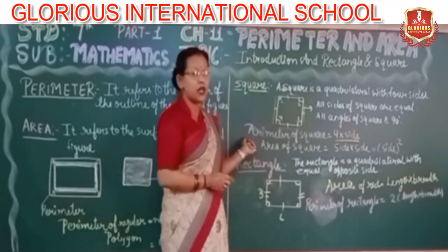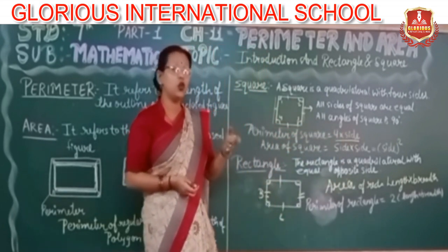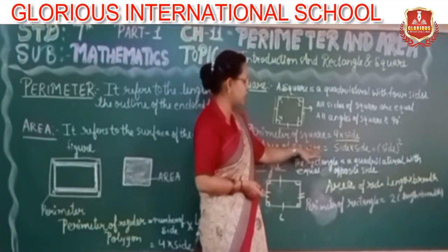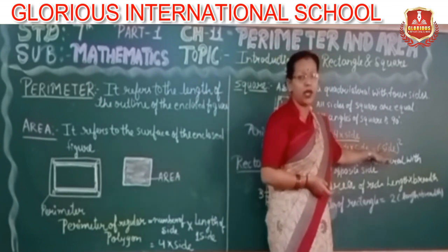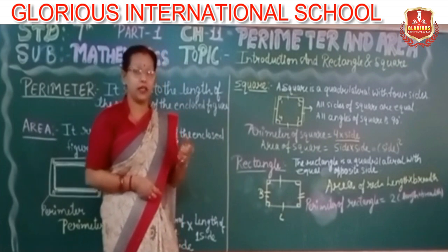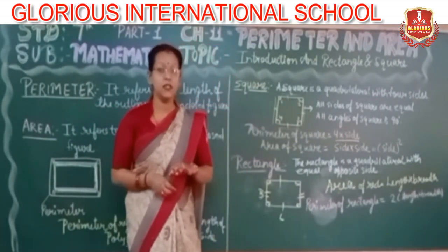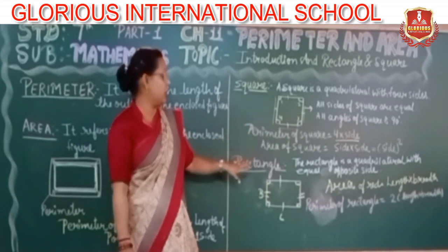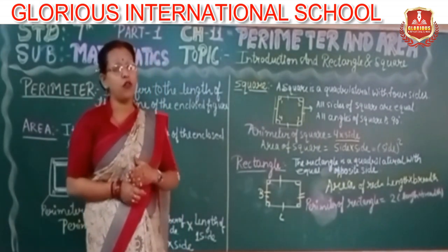So, the perimeter of the square: since all sides are equal, the perimeter of the square is simply 4 × side. Now, the area of the square is given by side × side, which is side squared.